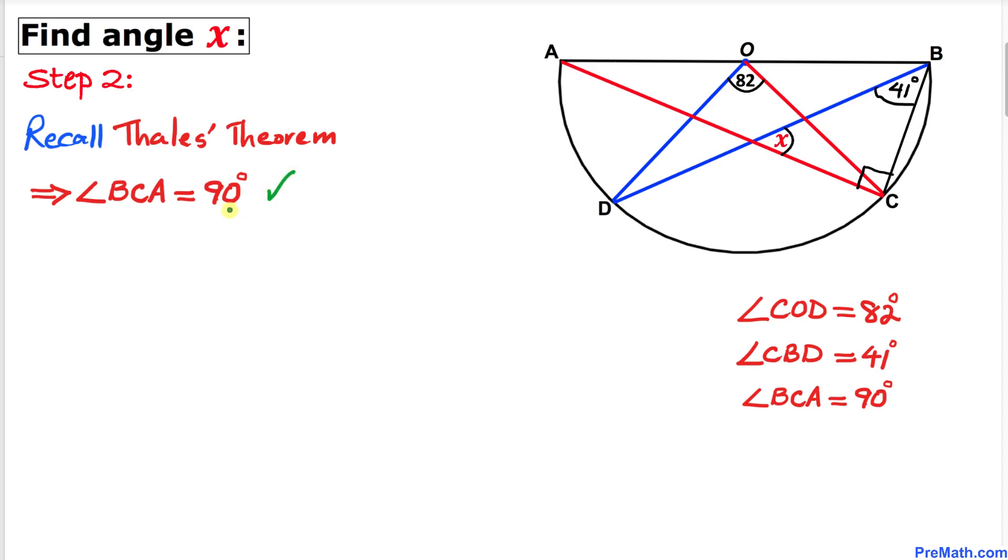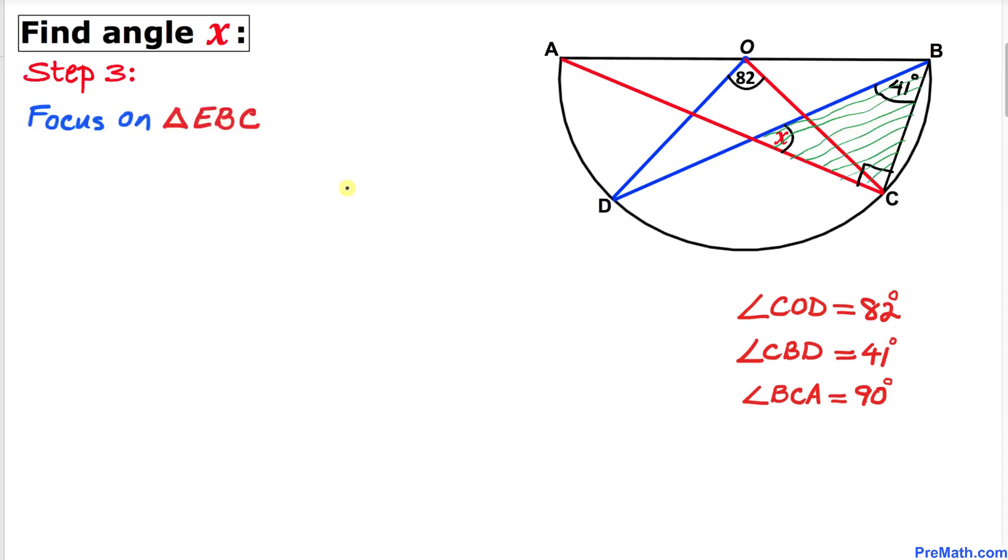And here's our final step. Let me go ahead and call this point E. Now we are going to focus on triangle EBC. We know that the angle sum in any triangle is 180 degrees. That means the sum of all these three angles X,